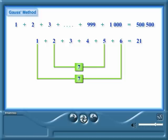He then paired the second and second-last number, which also has a sum of 7. Then he paired the third and third-last number, which also has a sum of 7.